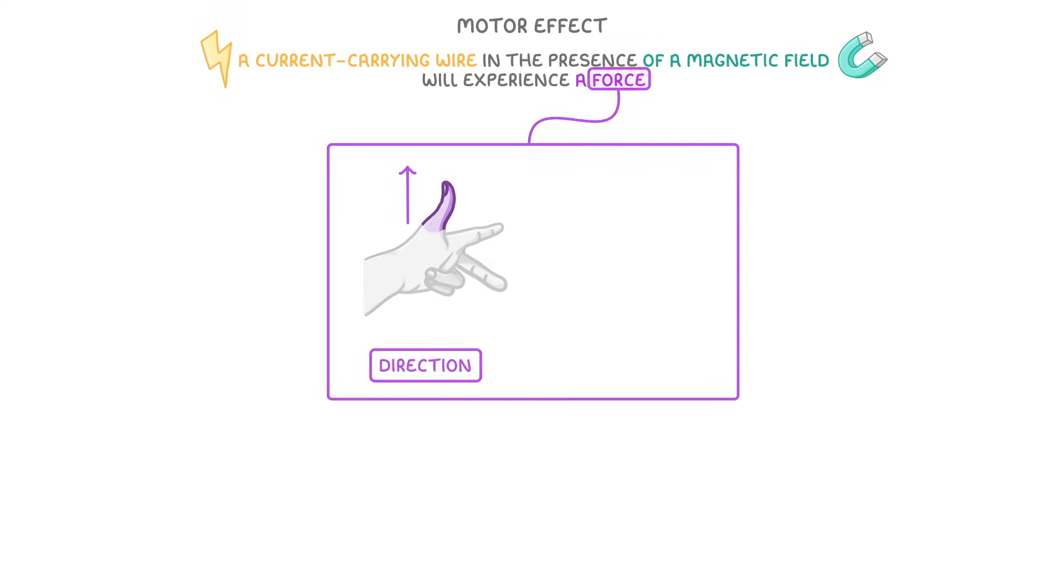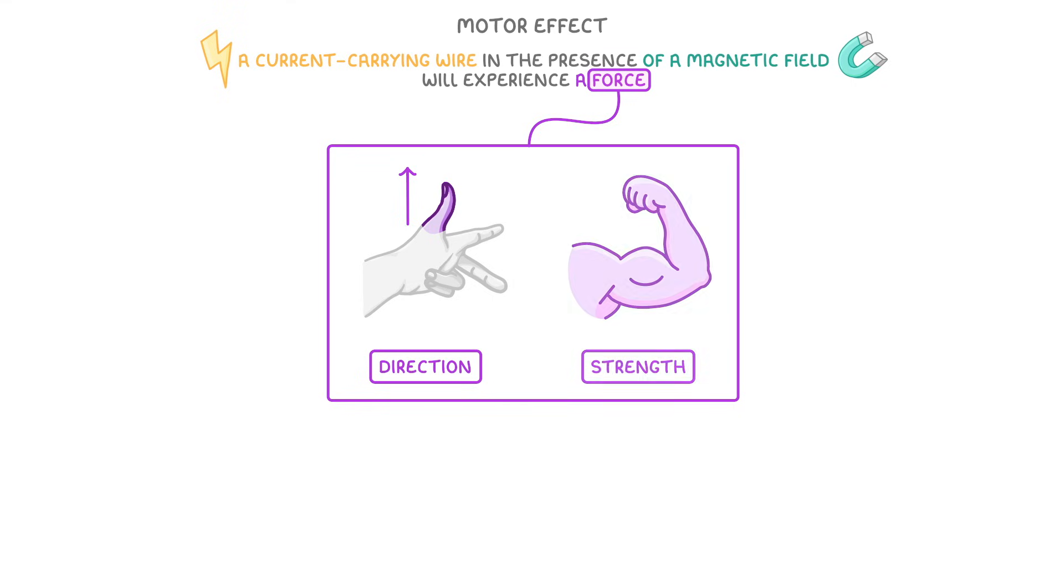In today's video we're going to take a look at the motor effect, which is the idea that a current carrying wire in the presence of a magnetic field will experience a force, and we'll cover how we can find out the direction of the force and its strength.